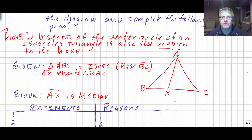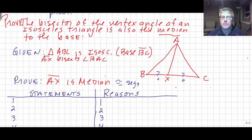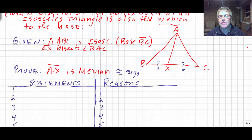How will we know if AX is a median? If we know our vocabulary, we know that medians create congruent segments. So if we can get BX congruent to XC, then AX is going to be a median. BX congruent to XC will be our second-to-last step. Consistent with what we've done before, we'll probably have to prove the two triangles congruent, then use CPCTC to get those segments congruent, and then we'll have a median. I'm working from the bottom of my proof backwards.